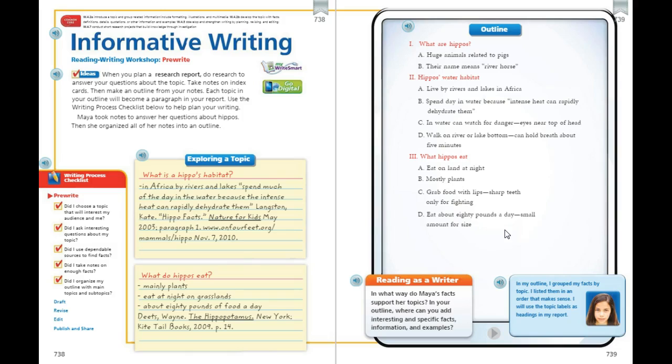So we are going to reading as a writer. In what ways do Maya's facts support her topics? In your outline, where can you add interesting and specific facts, information, and examples?